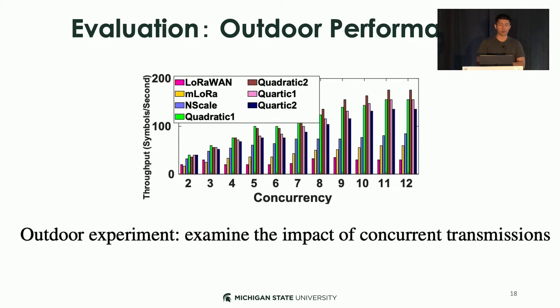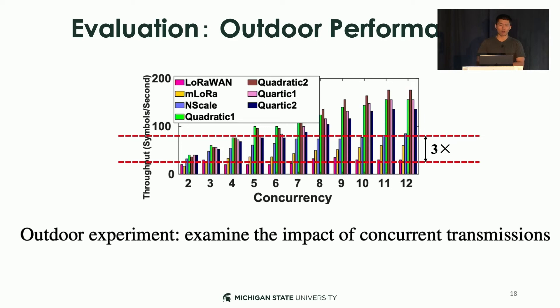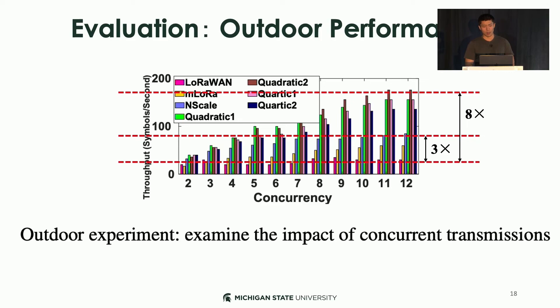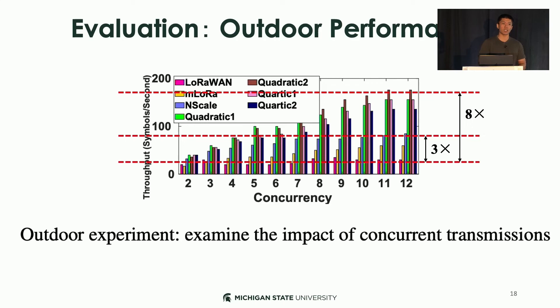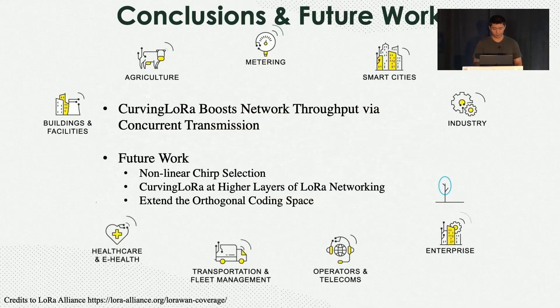For outdoor scenario evaluation, due to decoding failure of standard LoRa, its throughput remains almost constant even as concurrency increases. State-of-the-art works like mLoRa and NScale can improve throughput by three times over standard LoRa. For our work, due to the scattering effect of non-linear chirp modulation, we achieve eight times throughput gain over standard LoRa. Importantly, Curving LoRa's non-linear chirp modulation is orthogonal to all existing linear-chirp-based works, meaning we can incorporate mLoRa and NScale into the non-linear chirp modulation framework.